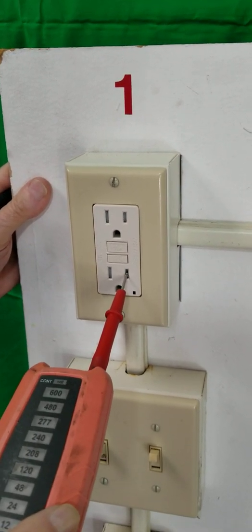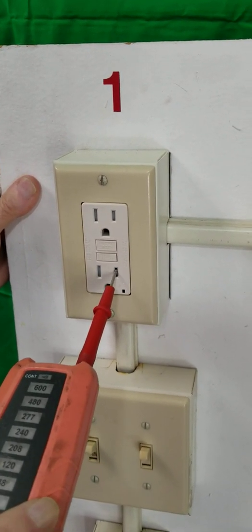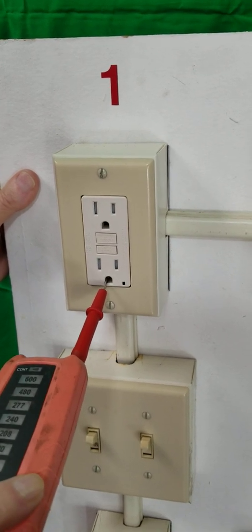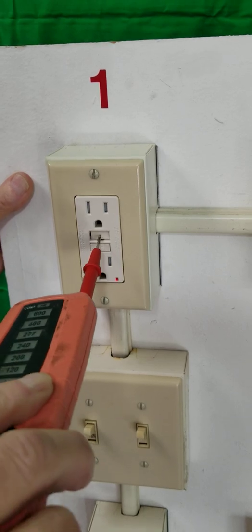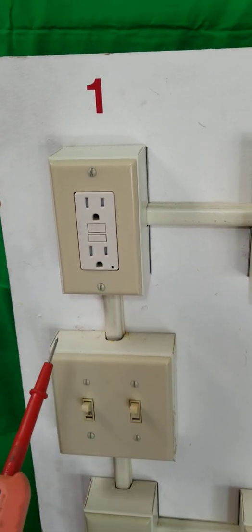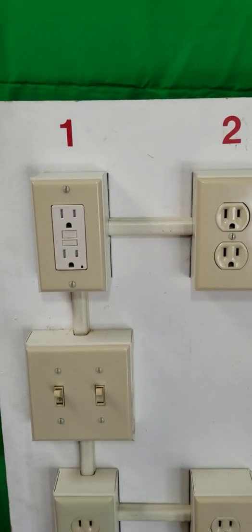So what happened was power leaving this live wire went to ground. So there was a difference. So I have to reset this, and now this receptacle is reset. This GFCI is operating properly.